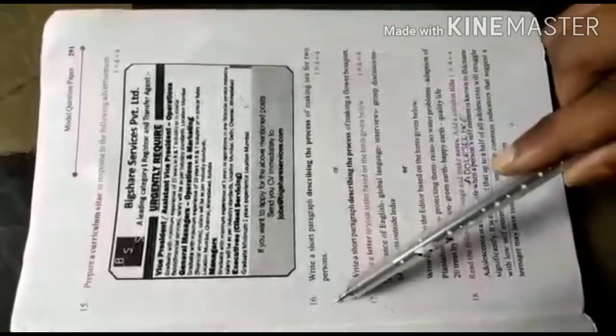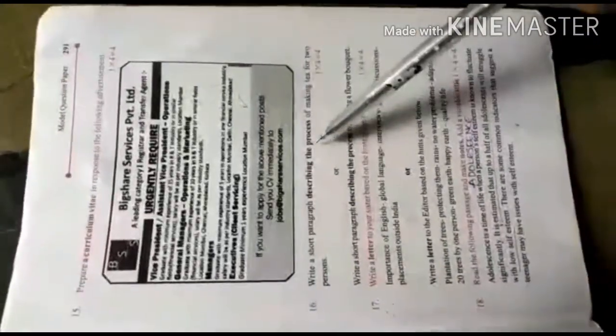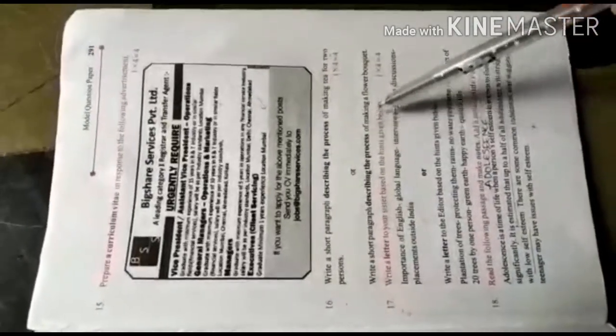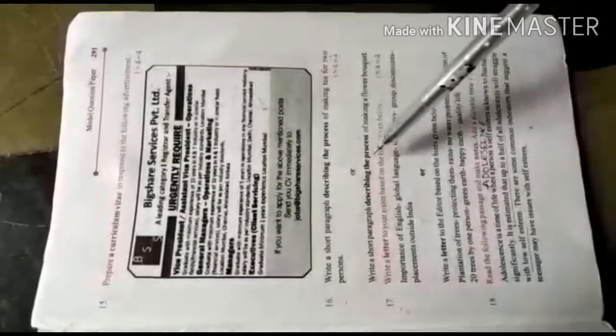Next is sixteenth bit: describing a process. Write a short paragraph - choose anyone. First option: describing the process of making tea. Second option: describing the process of making a flower bouquet.